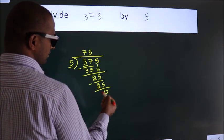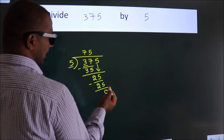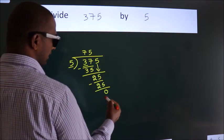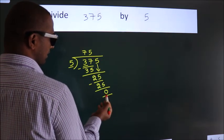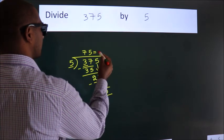After this, no more numbers to bring down. We got remainder 0. So this is our quotient.